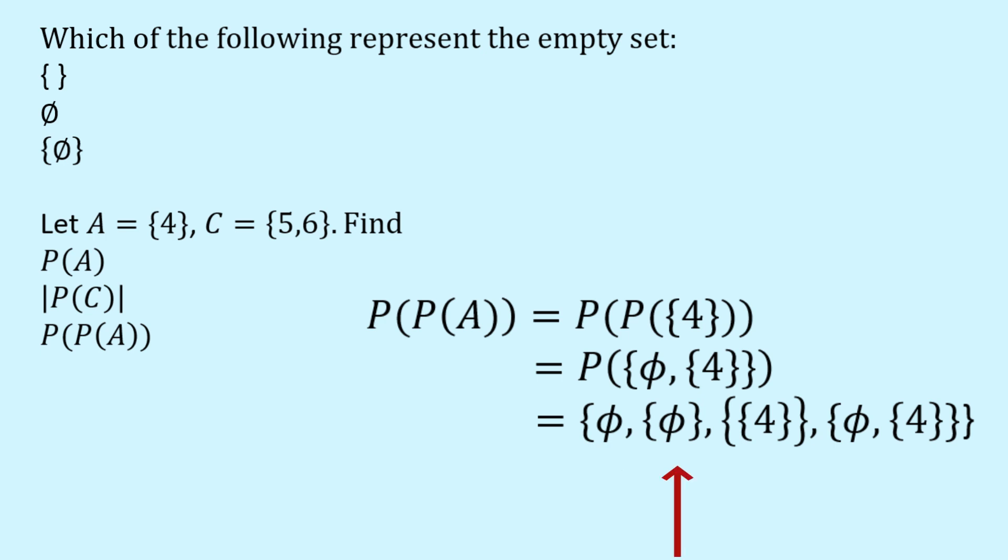Next we could have a set containing just the first element, which is a set containing the empty set. Next we could have a set containing the second element, which is a set containing a set containing four. Or finally we could get a set that's just made up of the two elements of the power set of A, or if you like it's the power set of A itself. And that's the set containing the set containing the empty set and the set containing four.